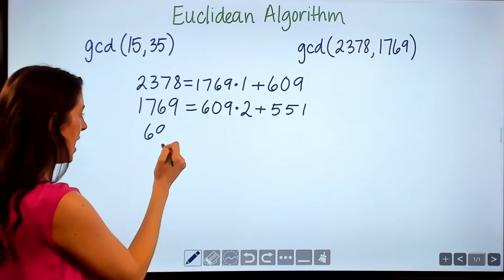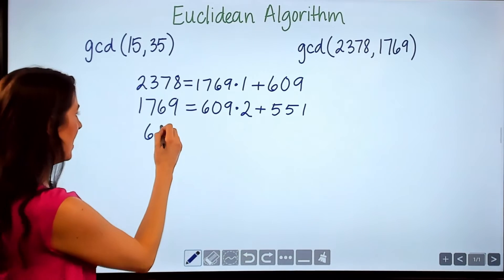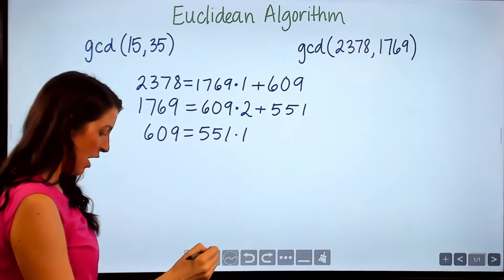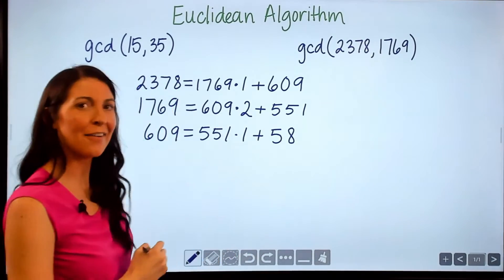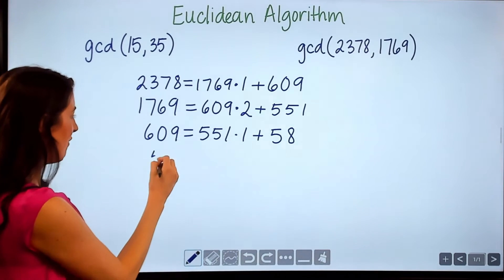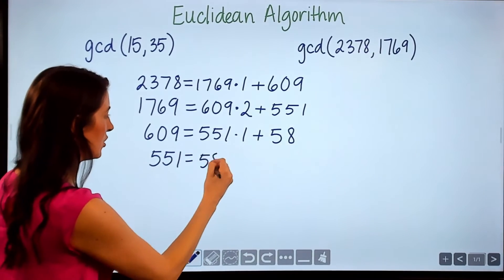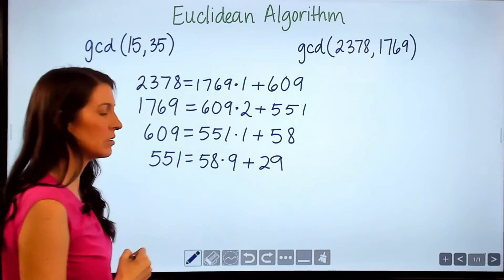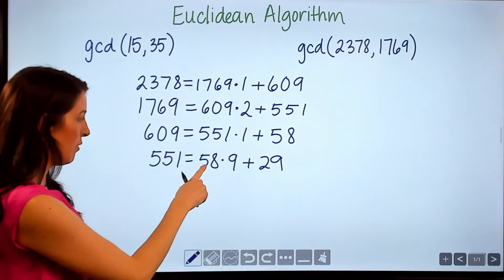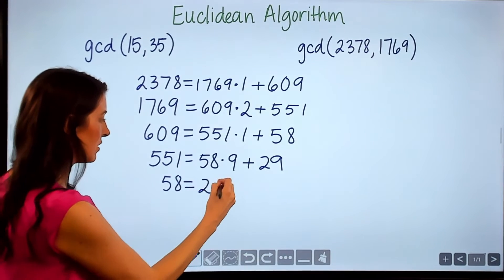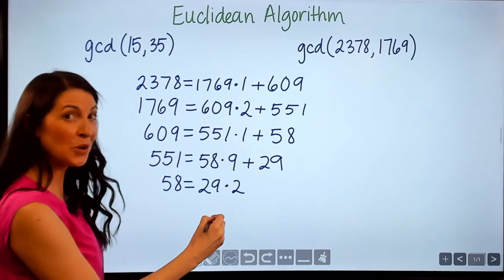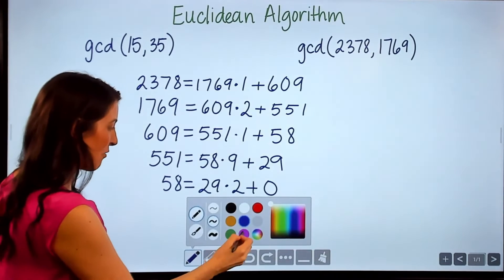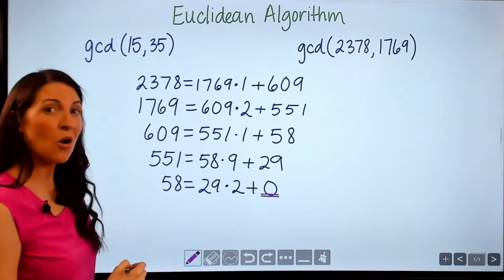Continuing: 609 is equal to 551 times 1 plus a remainder of 58. Then 551 is equal to 58 times 9 plus a remainder of 29. Moving the 58 over: 58 equals 29 times 2 plus a remainder of 0. We've arrived at a remainder of 0.